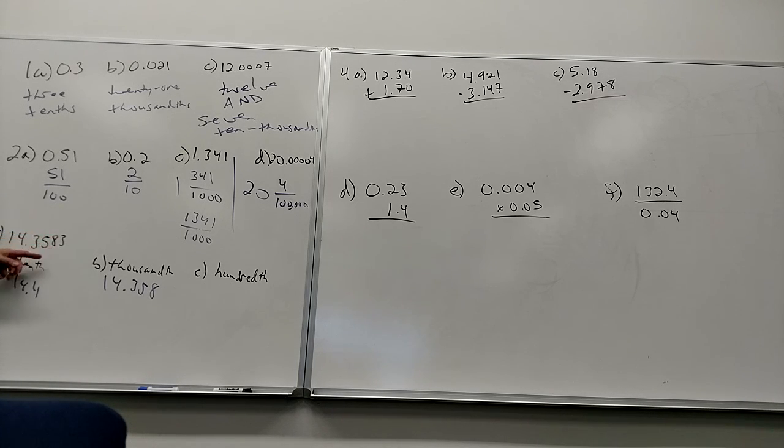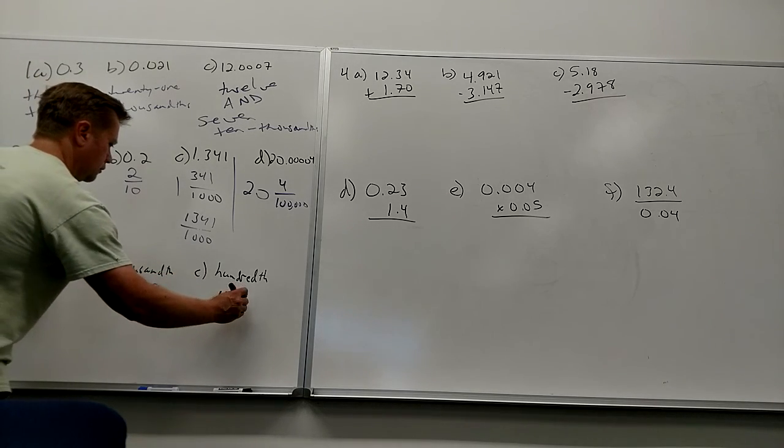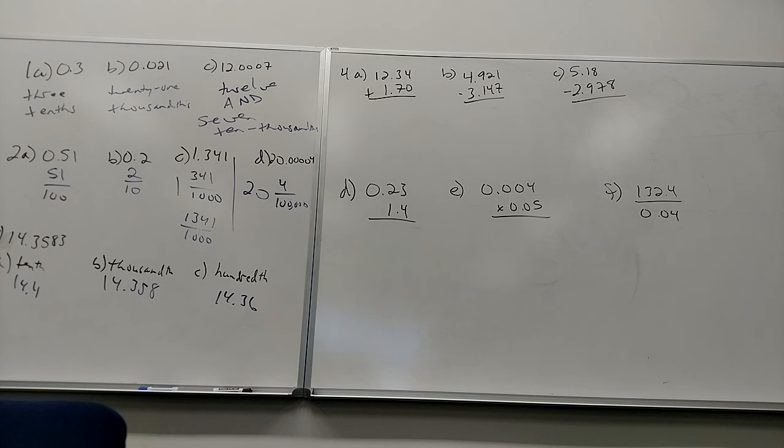Hundredth place? Five. The five. The next number is an eight. So I'm going to take that to six. So that'll be fourteen point three six. Zeros again.